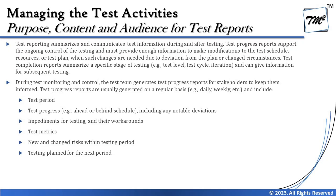A collection of sprints forming a release may have a test summary report. In many organizations, the summary report is also called the test completion report. These reports are not strictly standardized, though IEEE and other standards do provide templates. Organizations have the freedom to define report content based on stakeholder and business needs. Test reporting summarizes and communicates test information during and after testing. Test progress reports support ongoing control and must provide enough information to modify the test schedule, resources, or test plan when needed.